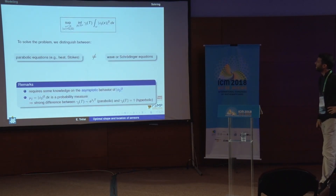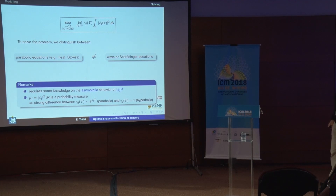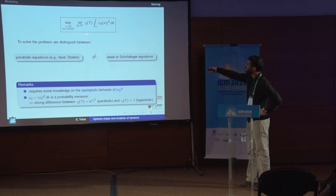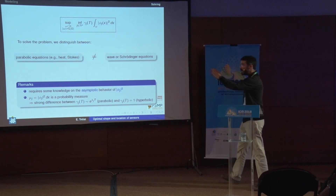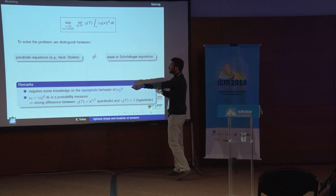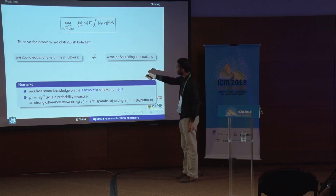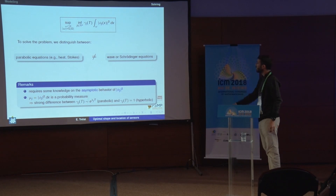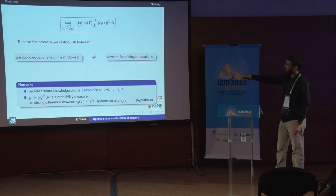Now, second part of my talk: let us solve the problem modeled in the first part. We are going to distinguish between two worlds: the parabolic world — like heat or Stokes equations — on one hand, and wave or Schrödinger equations on the other. Several preliminary remarks: we have here a problem of maximizing some infimum, and since the infimum runs over all possible modes, we can expect that eigenfunctions with large indices j will play a crucial role.